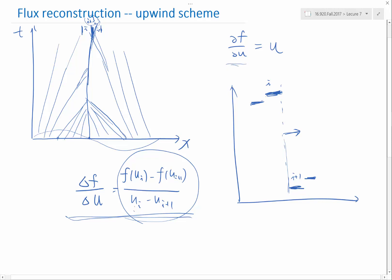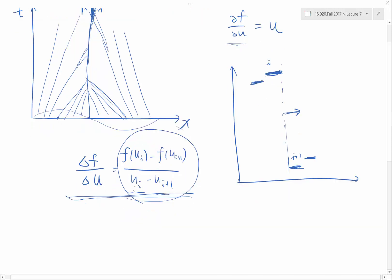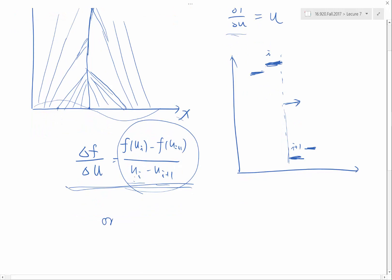And numerically, we also have to take a special case. When we decide which direction to look at, is that when Ui is actually equal to Ui plus one, this is going to give us NaN, right? Not a number. So we have to evaluate DFDU at Ui if Ui is equal to Ui plus one. Okay? So this is what the upwind scheme does.